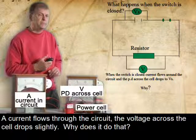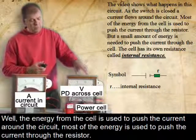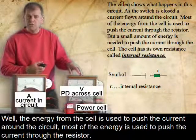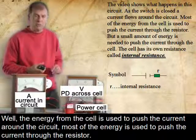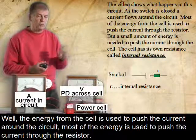Why does it do that? Well, the energy from the cell is used to push the current around the circuit. Most of the energy is used in pushing the current through the resistor.